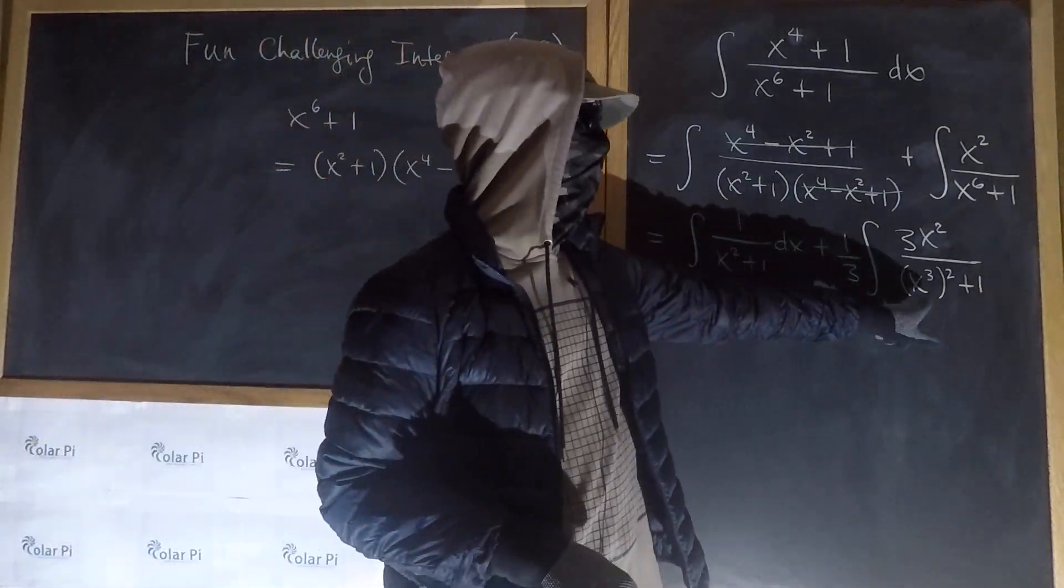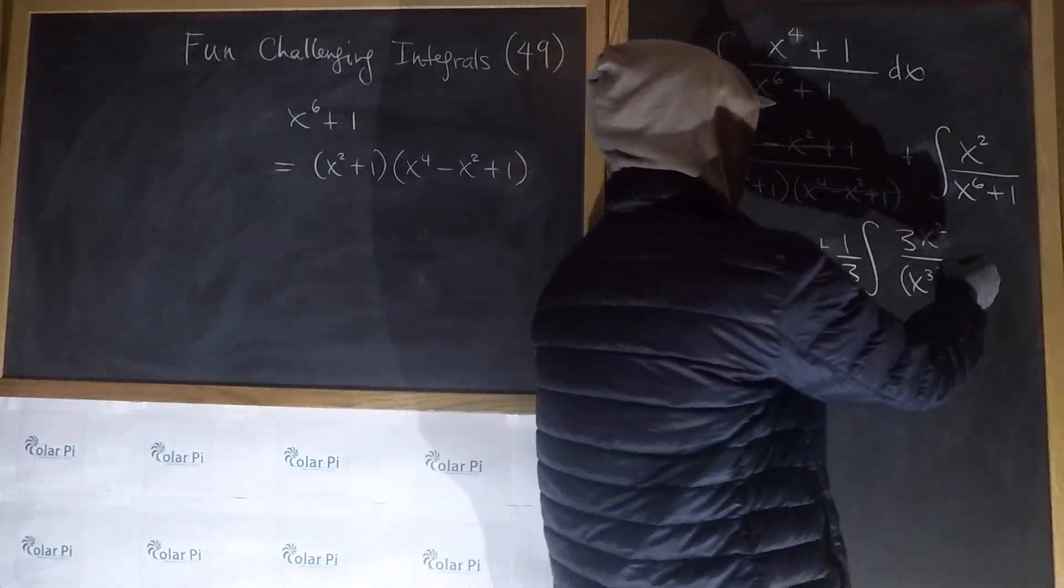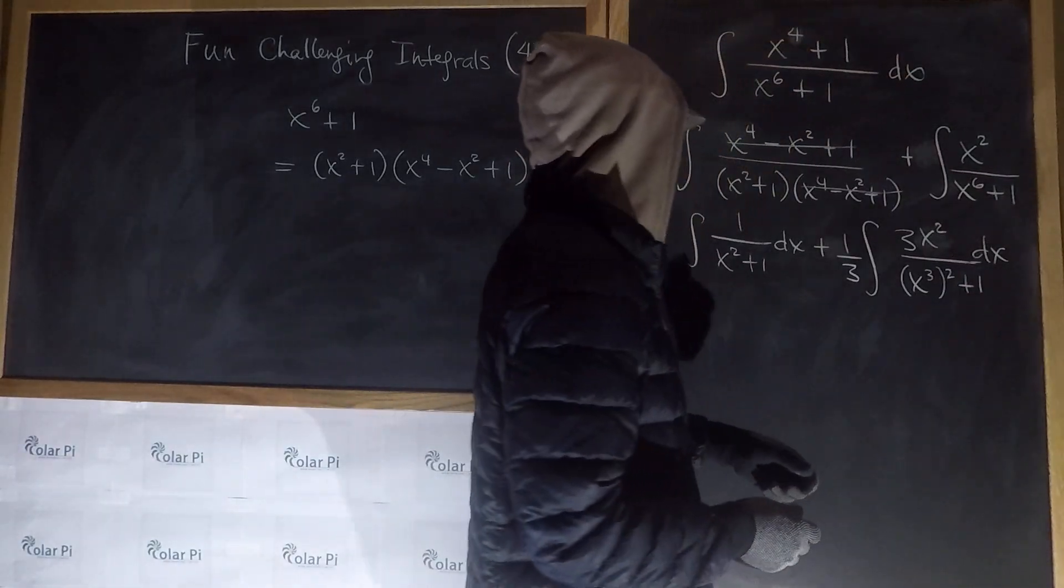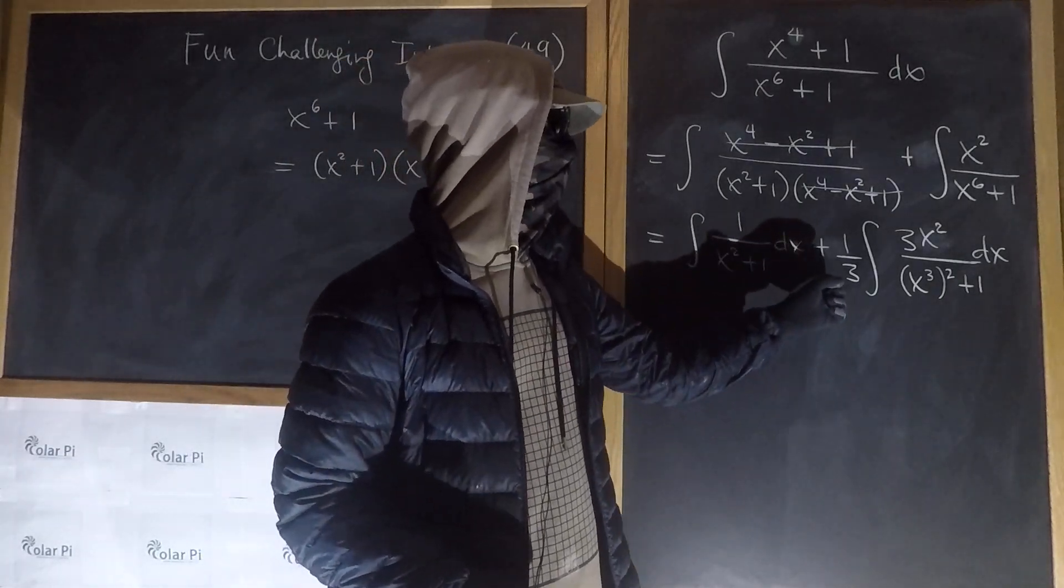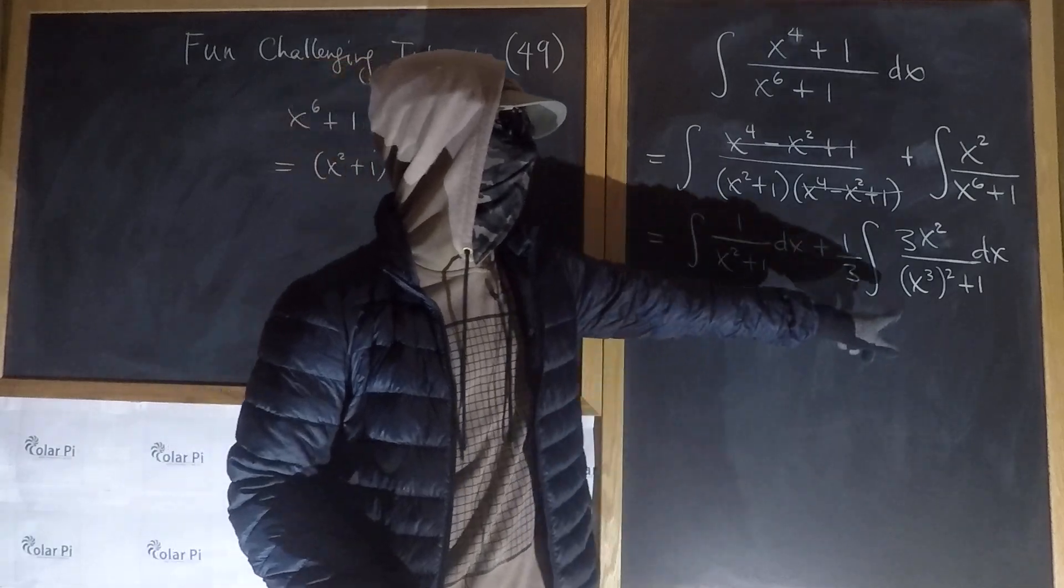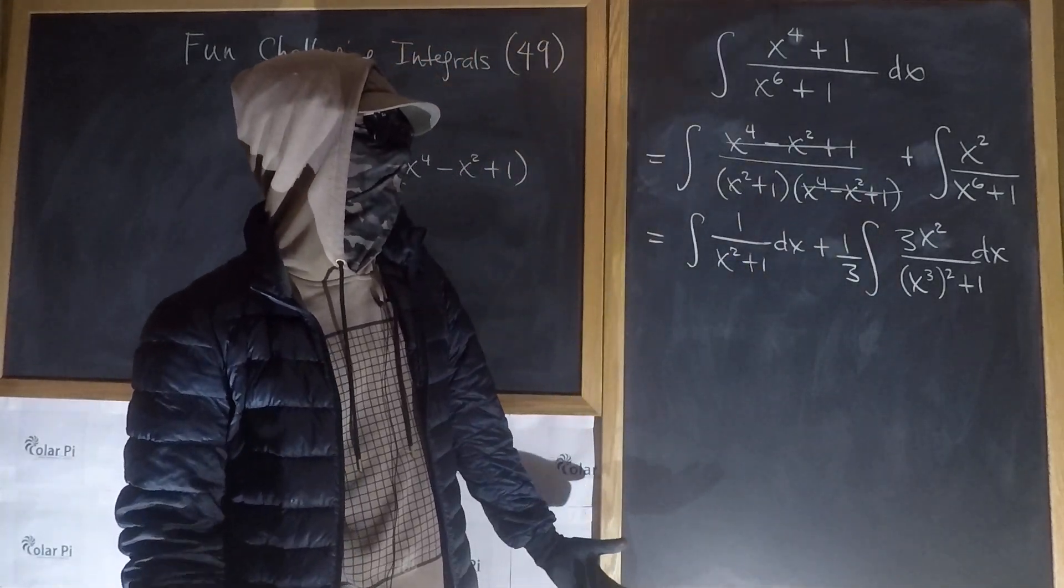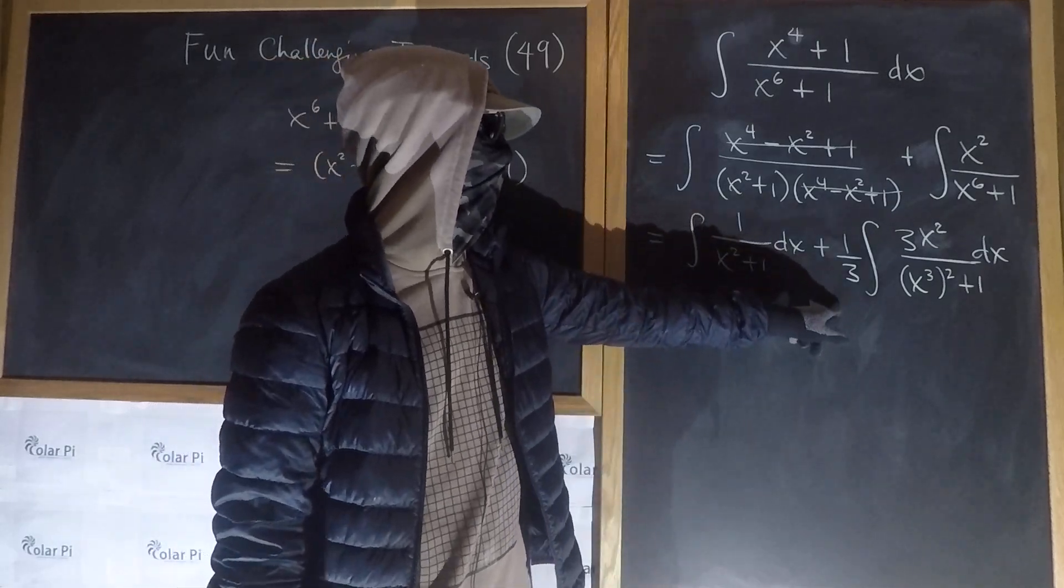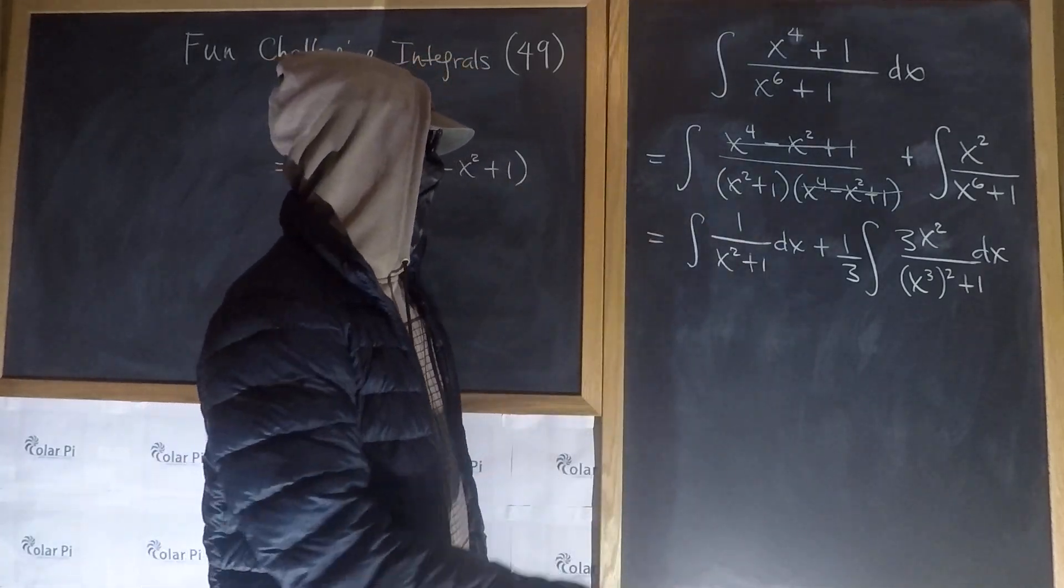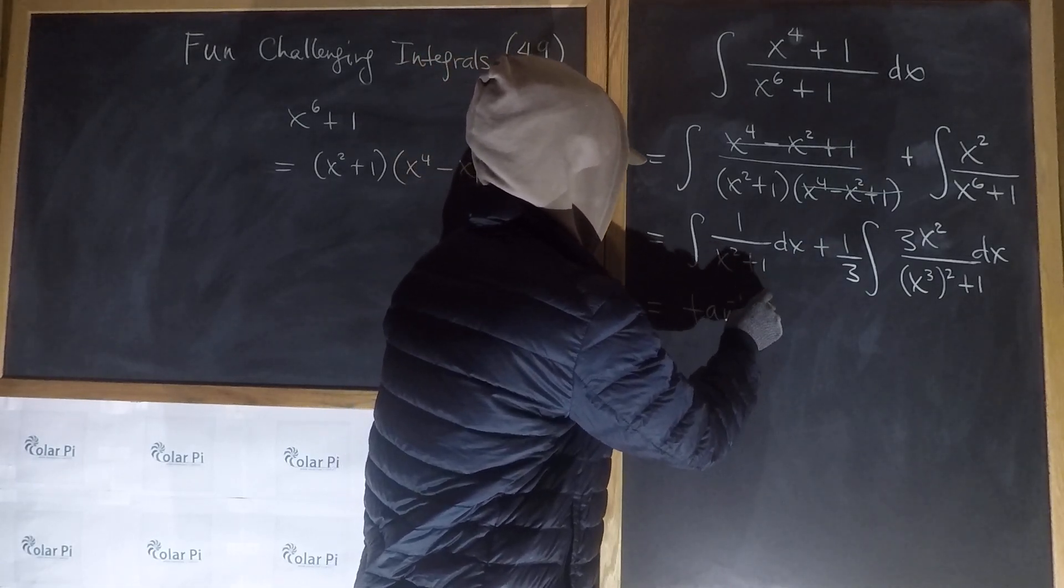So now with u equaling x cubed the second integral says a 3rd, and I'm missing a dx. It says a 3rd du which is 3x squared dx with u being x cubed. And so du over u squared plus 1, that's tan inverse of u times a 3rd. And this is clearly tan inverse of x. So this is tan inverse of x, this first integral.